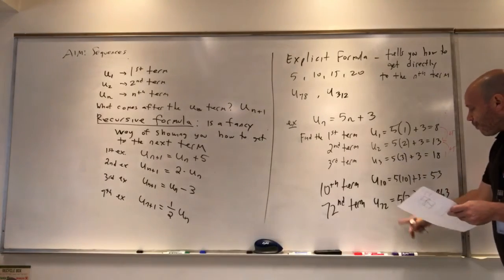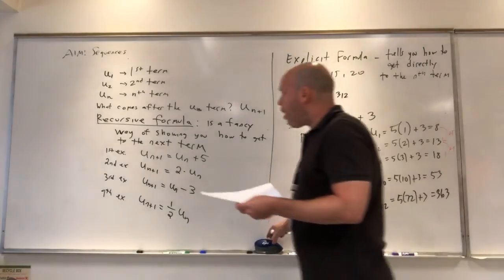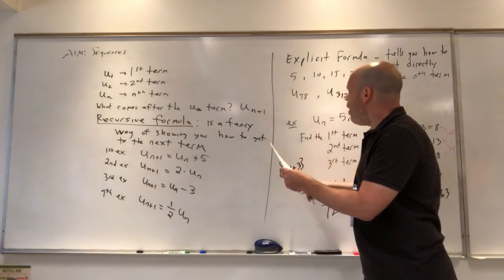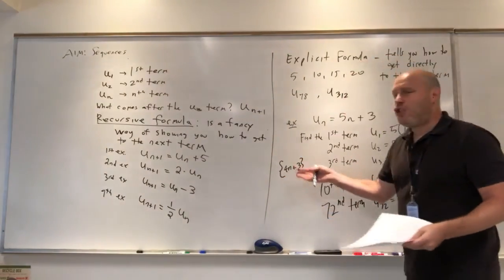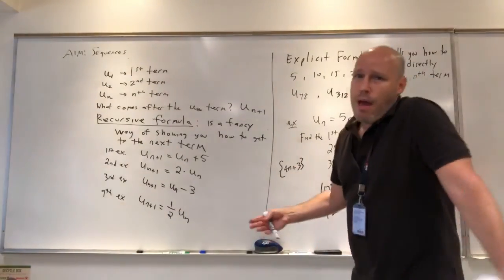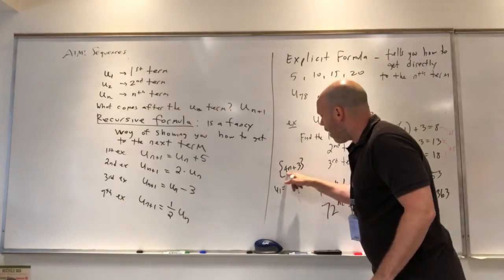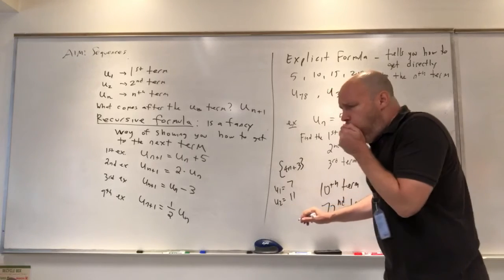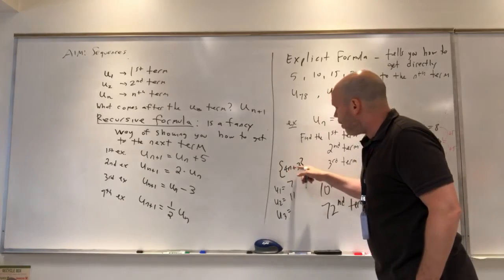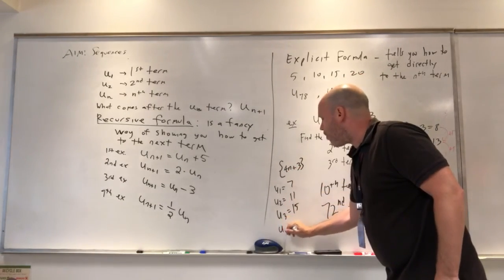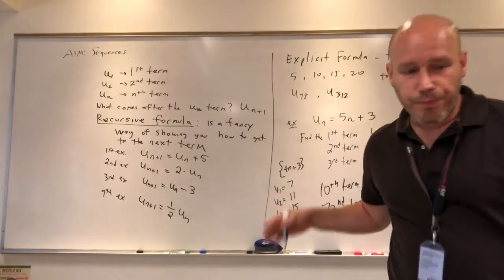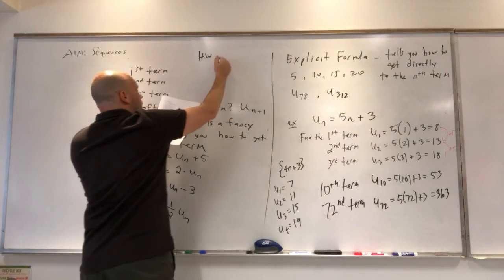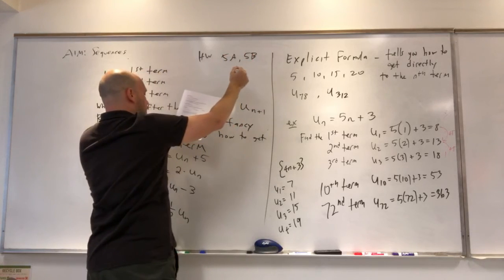In the homework, you might see the formula in brackets, like [4n + 3] — this is the explicit formula. They might say 'generate the first four terms of the sequence,' and you'd say: first term is 4(1) + 3 = 7, second term is 4(2) + 3 = 11, third term is 4(3) + 3 = 15, fourth term is 4(4) + 3 = 19. For homework, you're going to do everything in 5a and 5b.